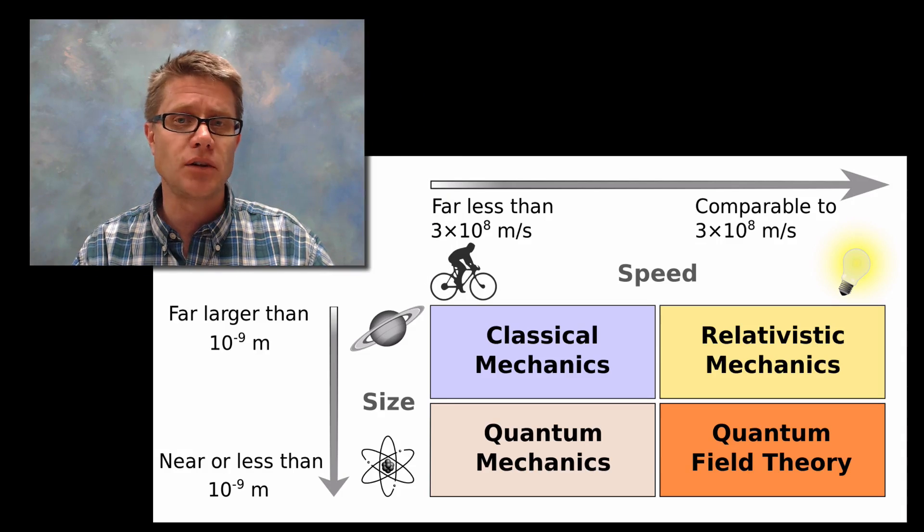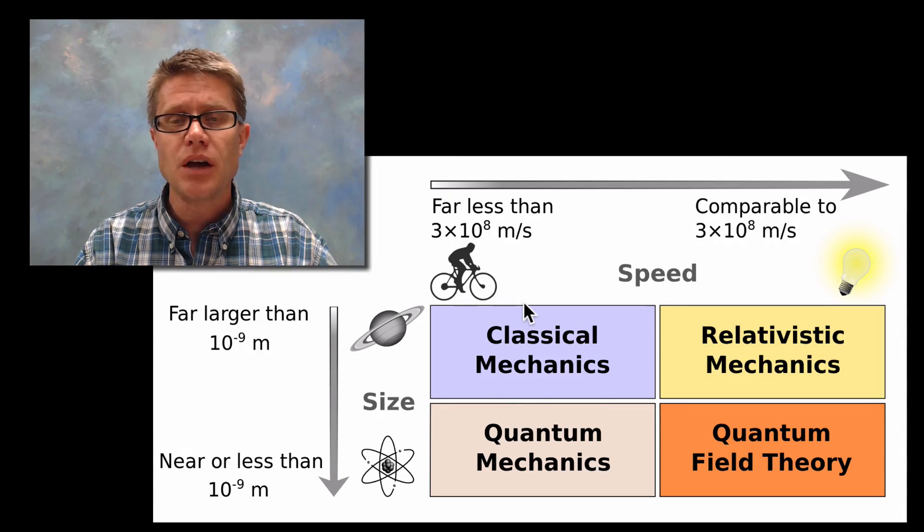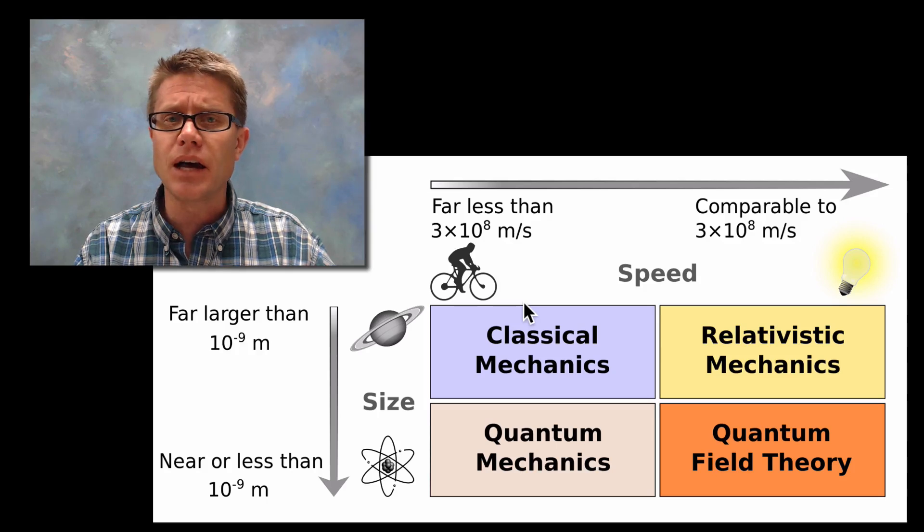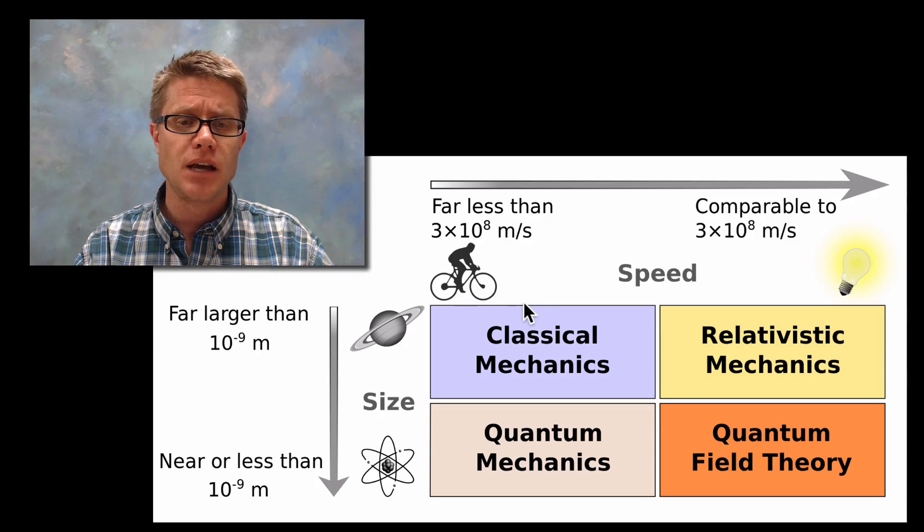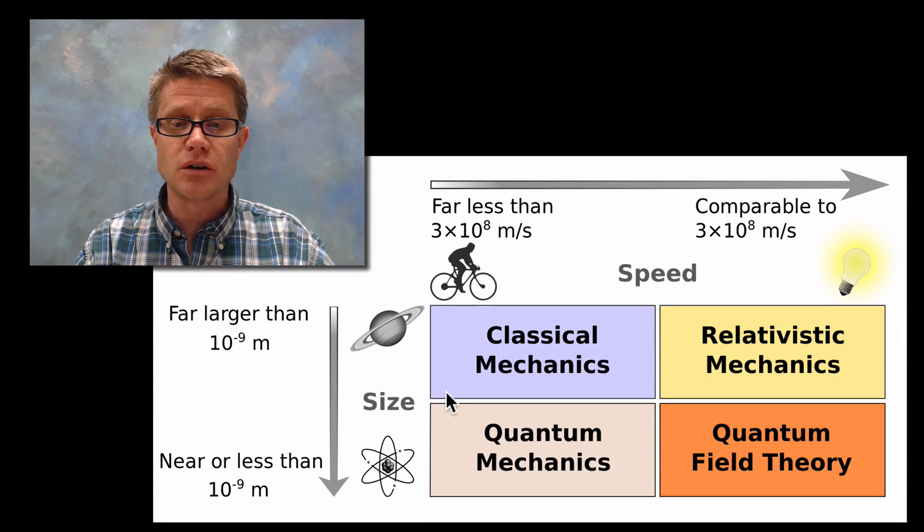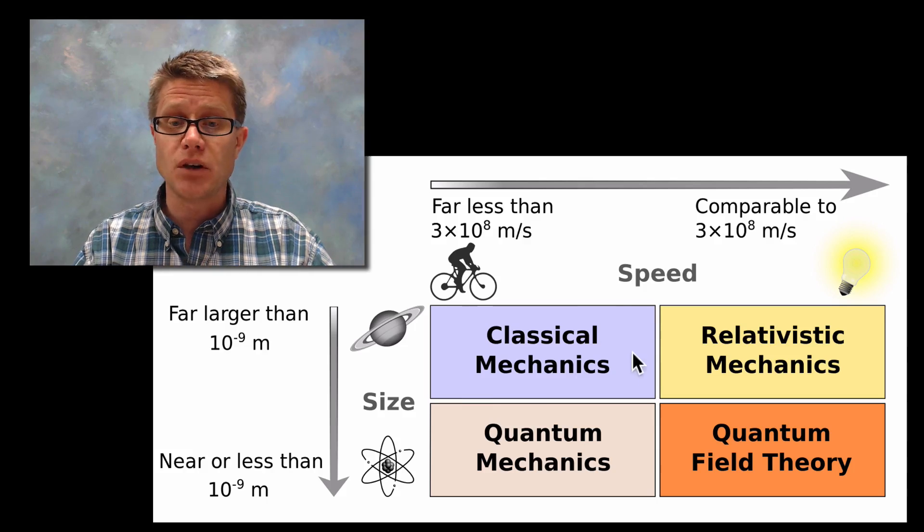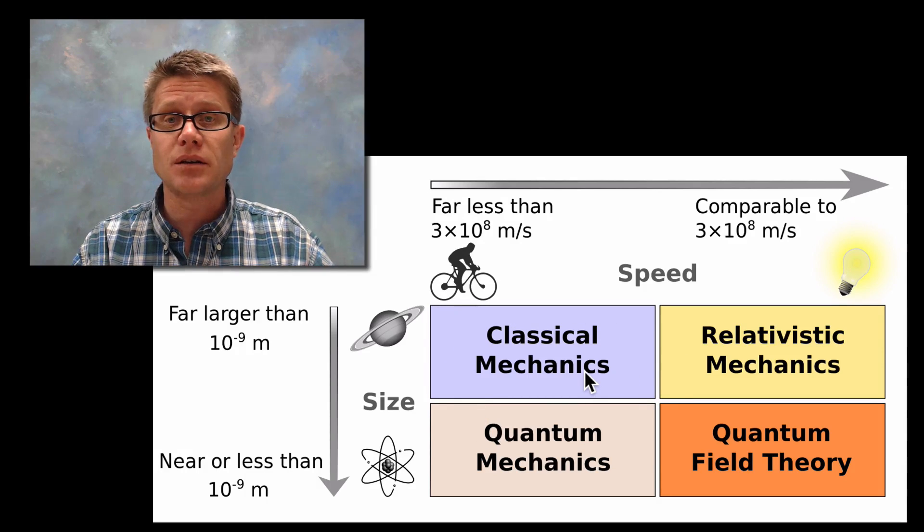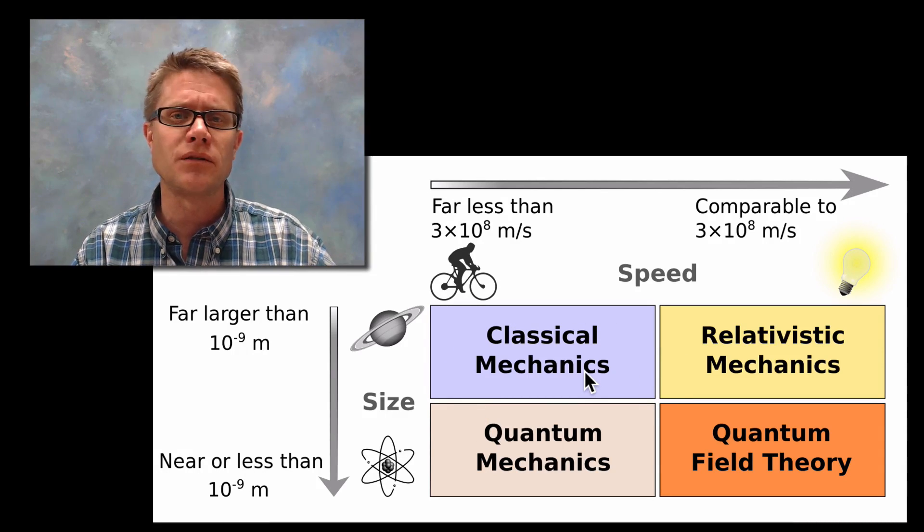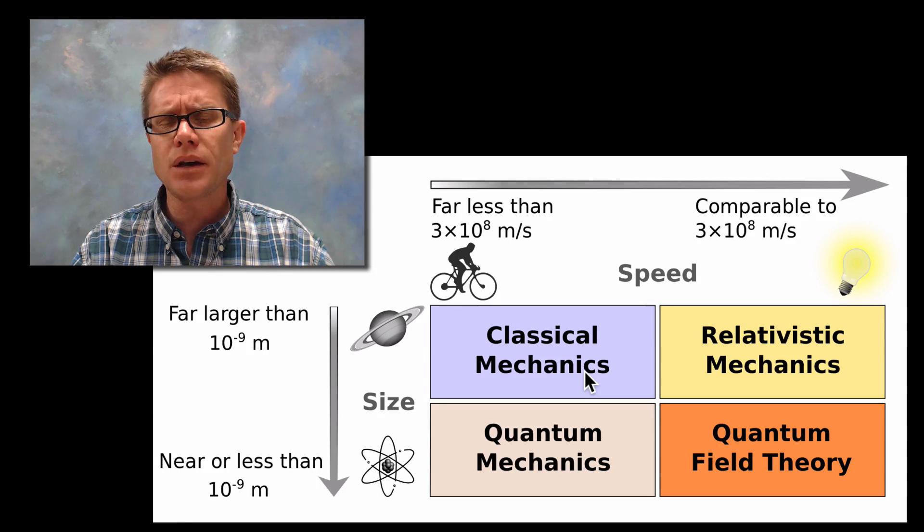Well we live in the world of classical mechanics. We live in a world where everything travels much less than the speed of light. And things are much larger than the size of an atom. And so we live in this world of classical mechanics. That's mostly what you're going to learn in physics 1 and 2. But know this.